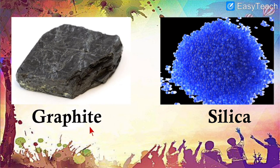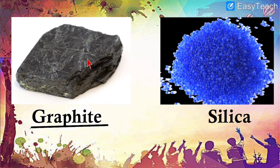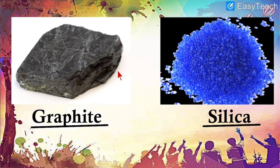Image number eleven and twelve. G-R-A-P-H-I-T-E — Graphite. It is used for so many things; graphite is a very, very useful rock. Then next image: S-I-L-I-C-A — Silica. You can see it is of blue color. So these are two types of rocks — number eleven is Graphite, number twelve is Silica.